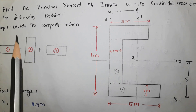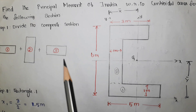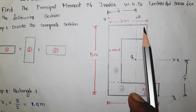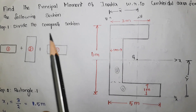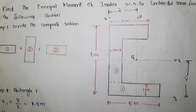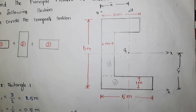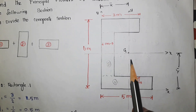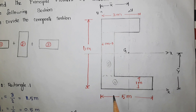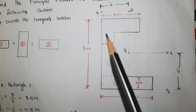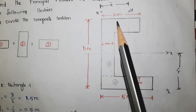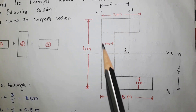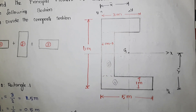Find the principal moment of inertia with respect to centroidal axis for the following section. Here is the given section with the centroid, centroidal x-axis, centroidal y-axis. The bottom width is equal to 5 meter, height is equal to 6 meter, and the top width is equal to 3 meter. The thickness of this C-section is 1 meter.